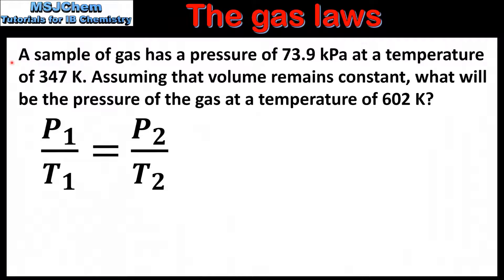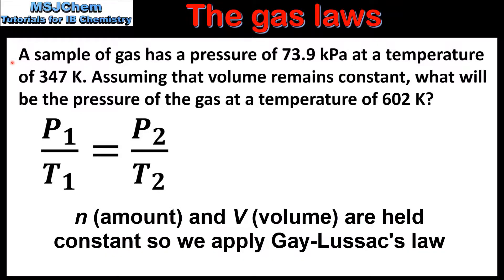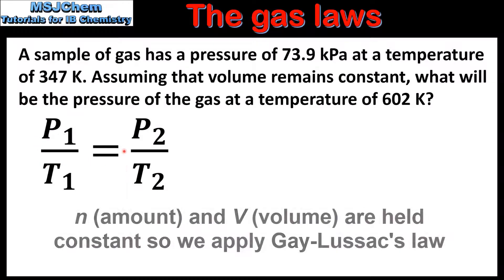In our next example we have a sample of gas with a pressure of 73.9 kilopascals at a temperature of 347 kelvin. Assuming that volume remains constant, what will be the pressure of the gas at a temperature of 602 kelvin? Here we have the equation for Gay-Lussac's law. In the question we're given P1, T1 and T2, so we need to solve for P2.